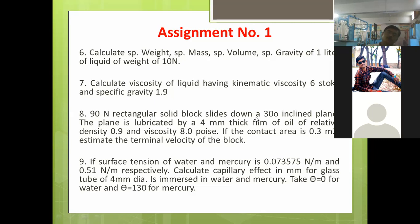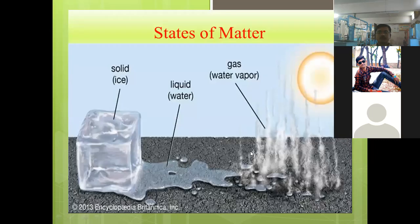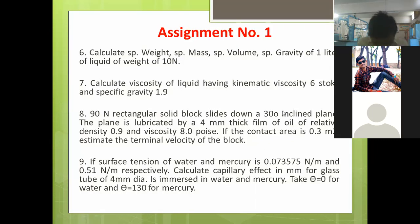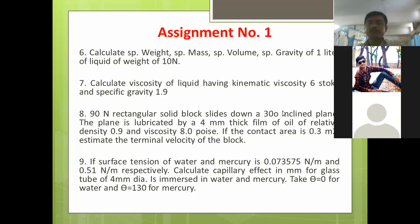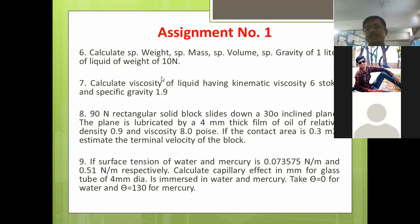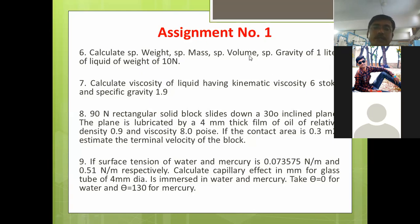Last question: If the surface tension of water and mercury is 0.073575 N/m and 0.51 N/m respectively, calculate the capillary effect in mm for a glass tube of 4 mm diameter immersed in water and mercury. Take theta equal to 0 degrees for water and theta equal to 130 degrees for mercury. This is your Assignment Number 1, given today. As the syllabus progresses through this unit, you can keep writing the answers, and submit the assignment after the unit is completed.